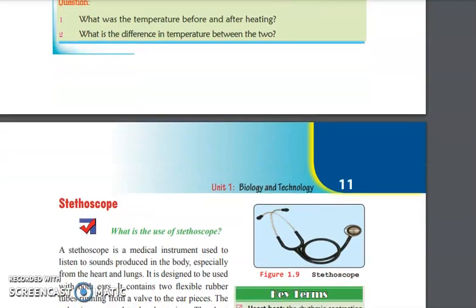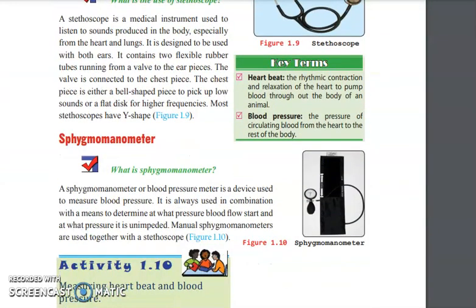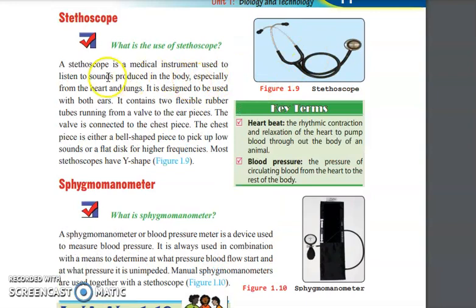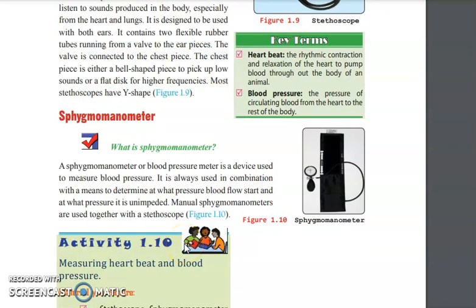Now let's look at stethoscope. Stethoscope is used to listen to sounds produced by the body like heart and lung. It is Y-shaped so we can listen to it using both our ears.